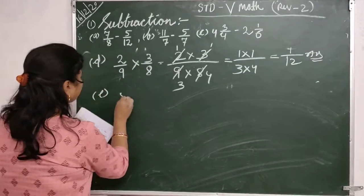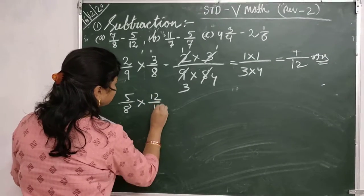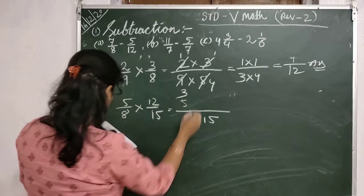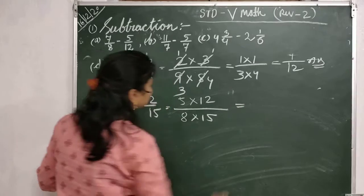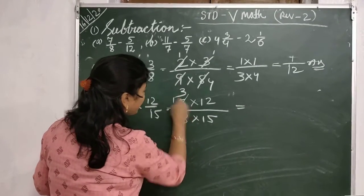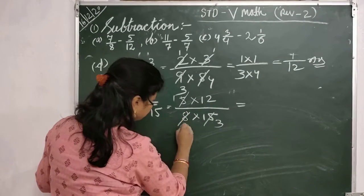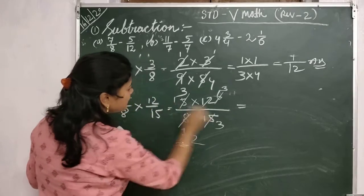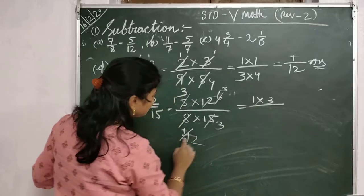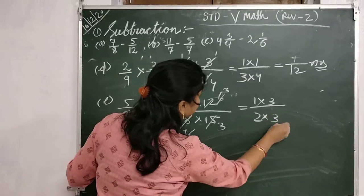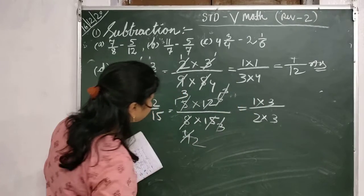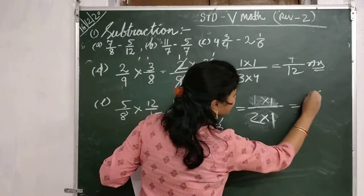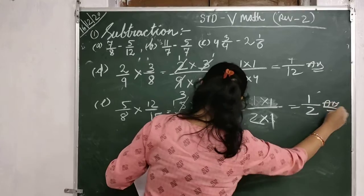Number E: 5 by 8 multiplied by 12 by 15. We have 8 multiplied by 15, and 5 multiplied by 12. Simplify: 5 and 15 — 5 times 1 is 5, 5 times 3 is 15. Then 12 and 8 — divide by 2: 4 and 6; divide by 2 again: 2 and 3. Then cancel 3 and 3. So 1 into 1 and 2 into 1. Your answer is 1 by 2.